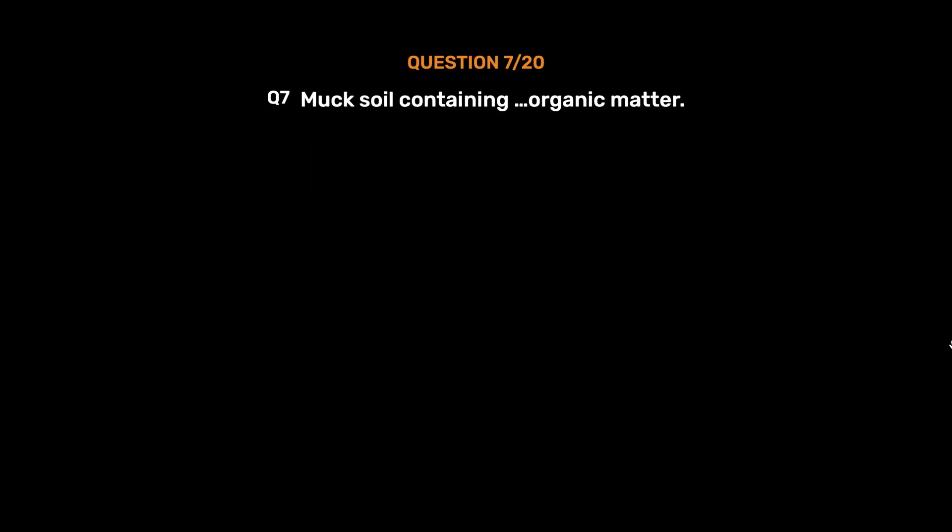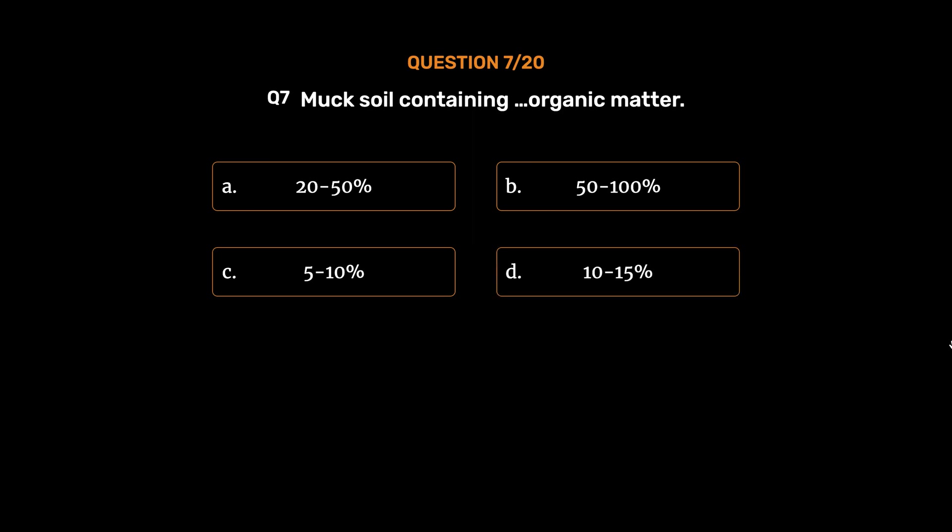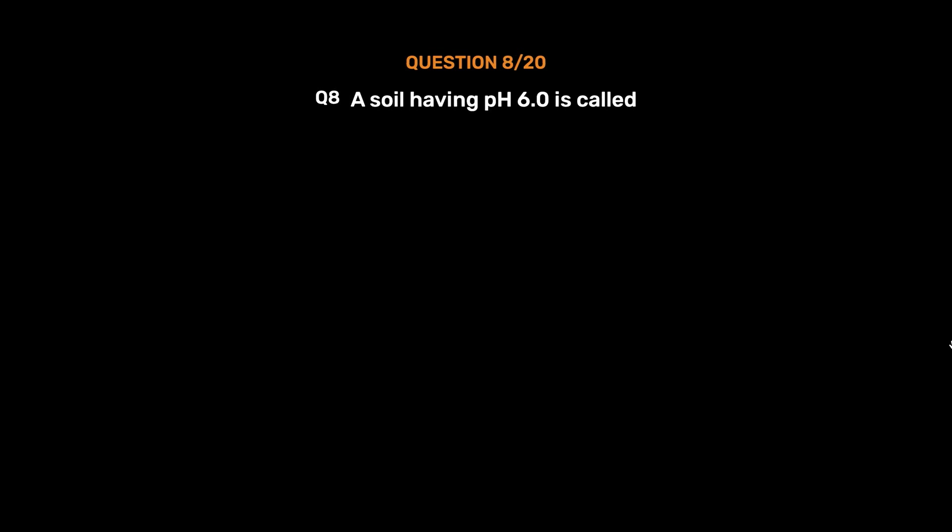Question number 7. Muck soil containing organic matter: option A, 20-50%; option B, 50-100%; option C, 5-10%; option D, 10-15%. The correct answer is option A, 20-50%.